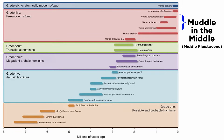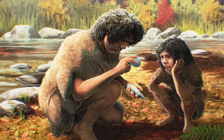The middle Pleistocene is colloquially known as the muddle in the middle, due to the fact that numerous Homo species are known from this period, but their relationships to one another are somewhat mysterious. This is due in part to the number of proposed species and the fact that many of them were interbreeding.